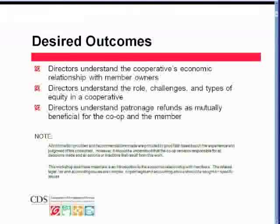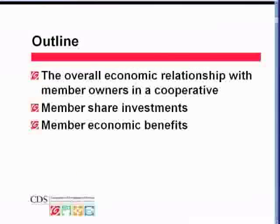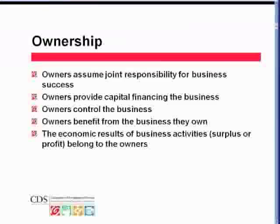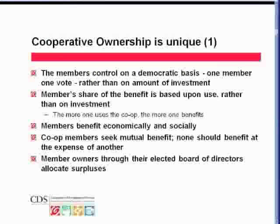Moving on to slide number four, looking at ownership. This shows ownership for any kind of business: that owners provide capital, they control the business, and they accrue benefits from the business that they own. On the next slide, we'll see there are some specific features of cooperative ownership that are unique.